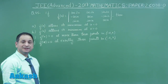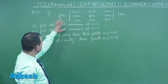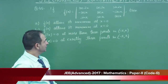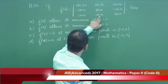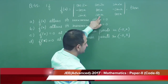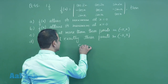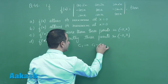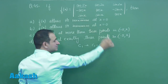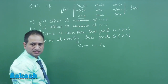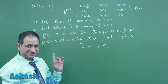The next problem is related to maxima and minima. The determinant is given to us — you can clearly see these two elements are the same and these two elements are the same. Now doing the operation c1 changes to c1 minus c2, you can clearly see this will become 0 and this will become 0. So in the first column, two elements will become 0. So expanding...